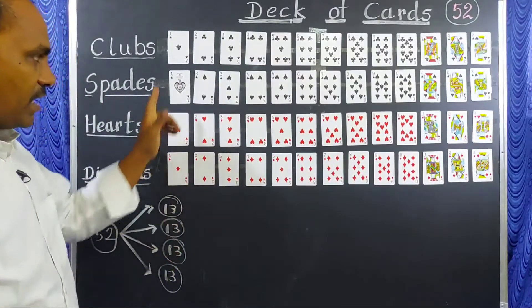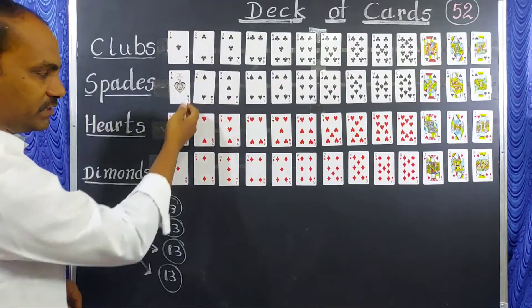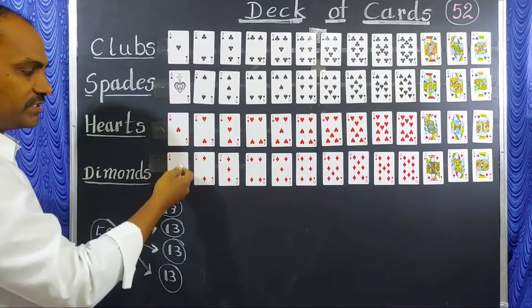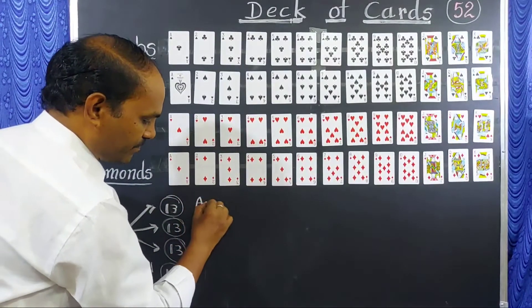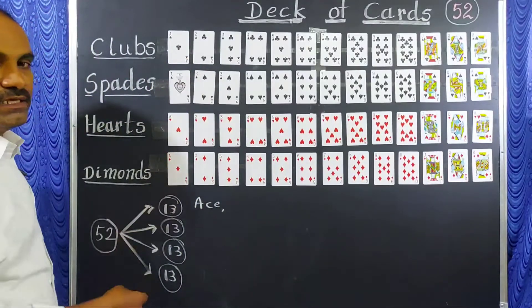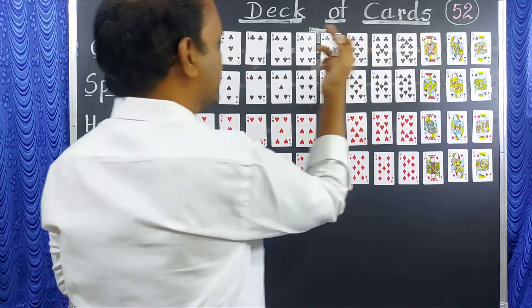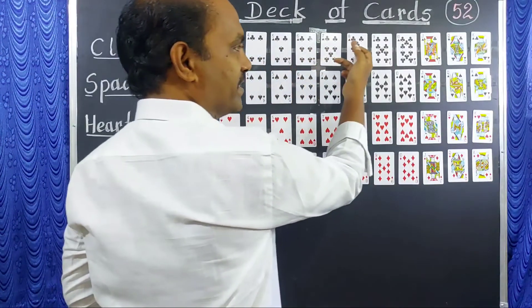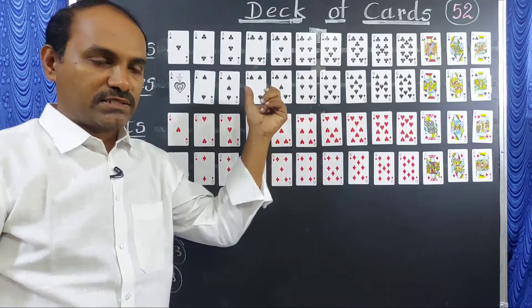In these 13 cards, the first card is Ace. Remaining cards are 2, 3, 4, 5, 6, 7, 8, 9, 10 — these are called number cards.